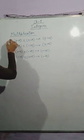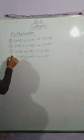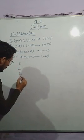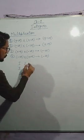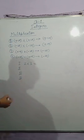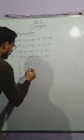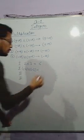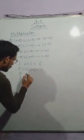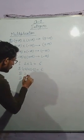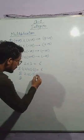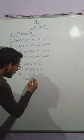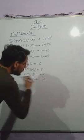First case, second case, third case, fourth case: two multiplied by three equals six. Minus two multiplied by minus three is also six. Minus two multiplied by three equals minus six, and minus two multiplied by three is equal to minus six.